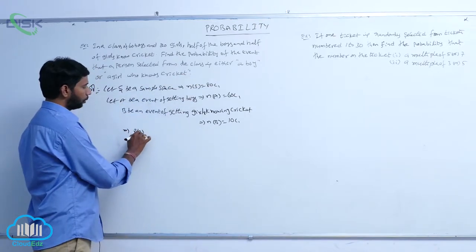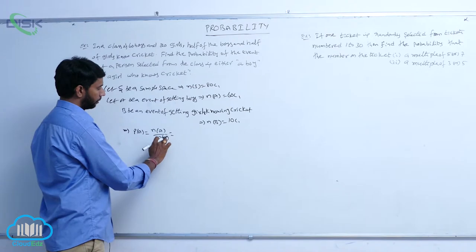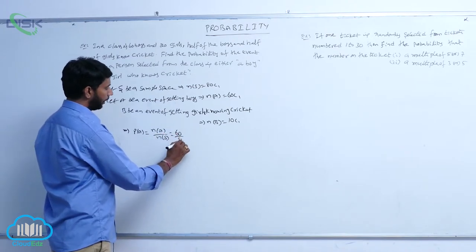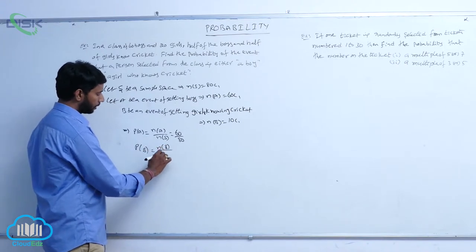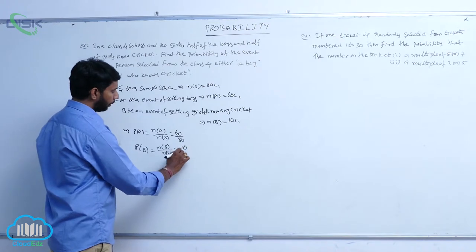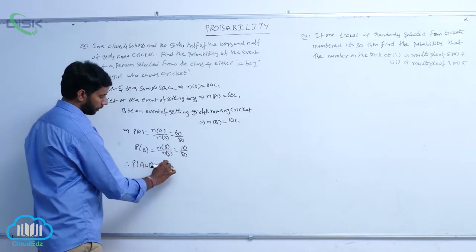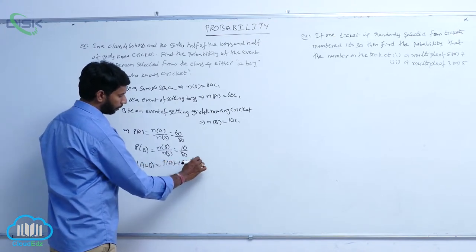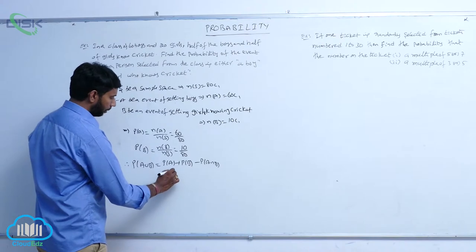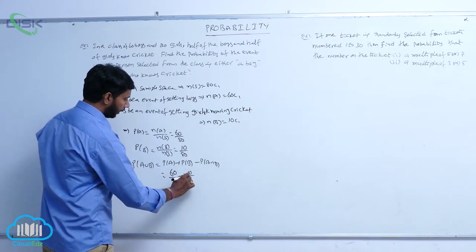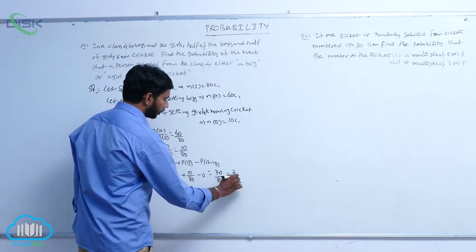P of A is equal to N of A by N of S, which is equal to 60 by 80. And P of B is equal to N of B by N of S, which is equal to 10 by 80. Therefore, P of A union B is equal to P of A plus P of B minus P of A intersection B. There is no common term between boys and girls, so it is 60 by 80 plus 10 by 80 minus 0, which equals 70 by 80, equal to 7 by 8.